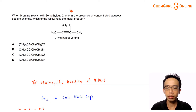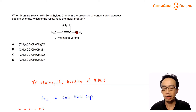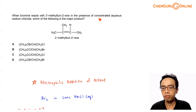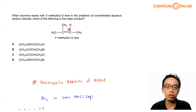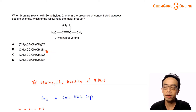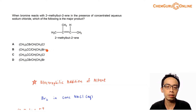When bromine reacts with this particular alkene, 2-methylbut-2-ene, in the presence of concentrated aqueous sodium chloride, which of the following is the major product? We are given four options: A, B, C, D. We need to determine which one of them is the major product.